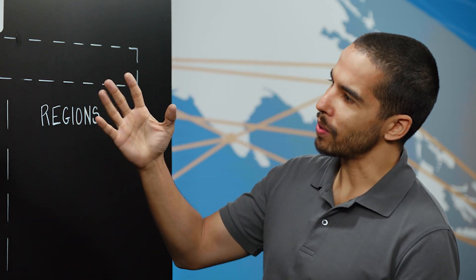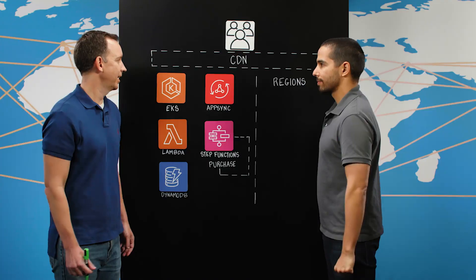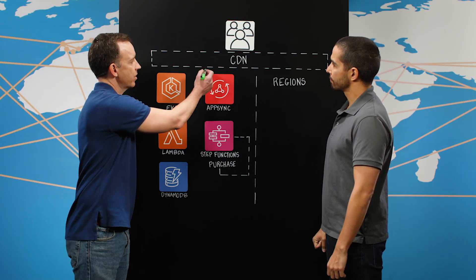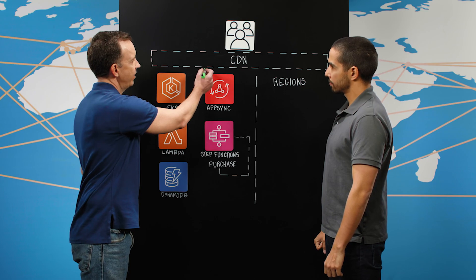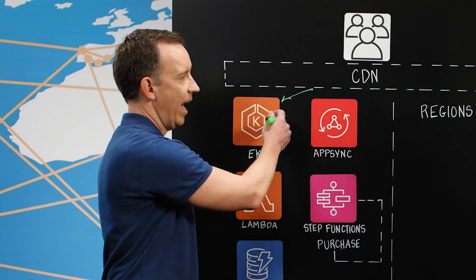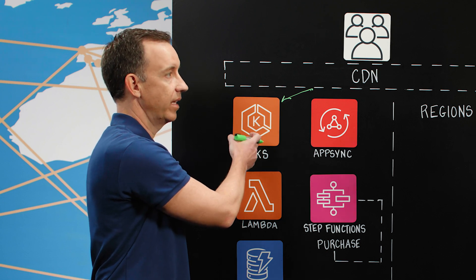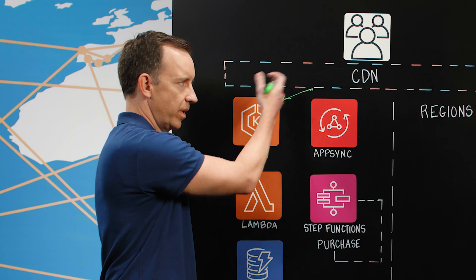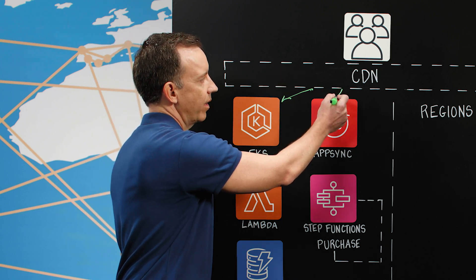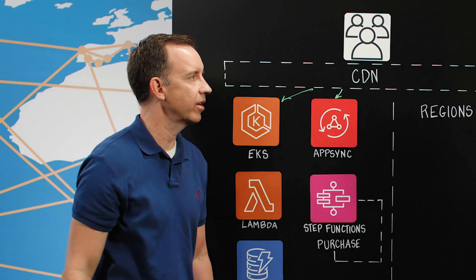So can you walk me through what are the components of the architecture? When a request comes in to render a web page, that goes to a web app that we have built in Next.js that's running on EKS. That's what does all the page rendering. When any API endpoint happens, that goes to our app AppSync.